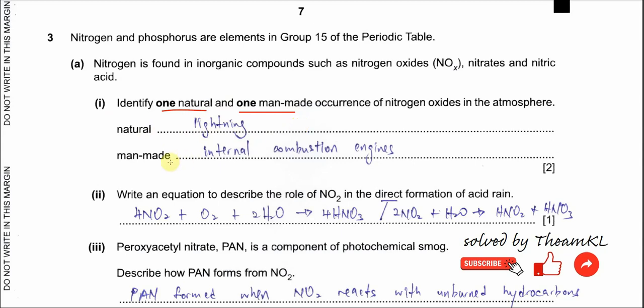For the man-made occurrence, we use the combustion engine. In the combustion engine, it is a high pressure and high temperature condition, which can also break the N≡N triple bond.